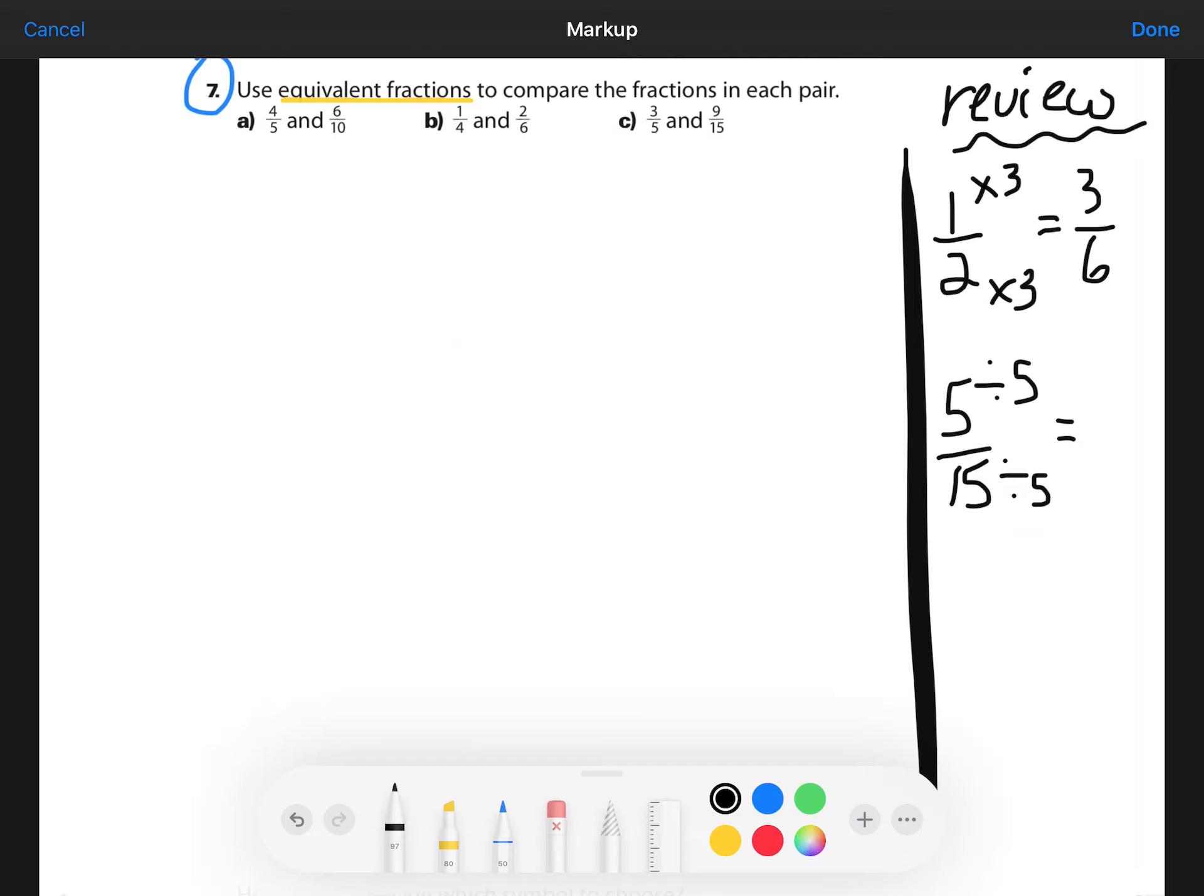Another example using dividing. You can also divide the numerator and the denominator by the same number to get an equivalent fraction. Five-fifteenths is equivalent to one-third. And I proved that because I divided both the numerator and the denominator by five.